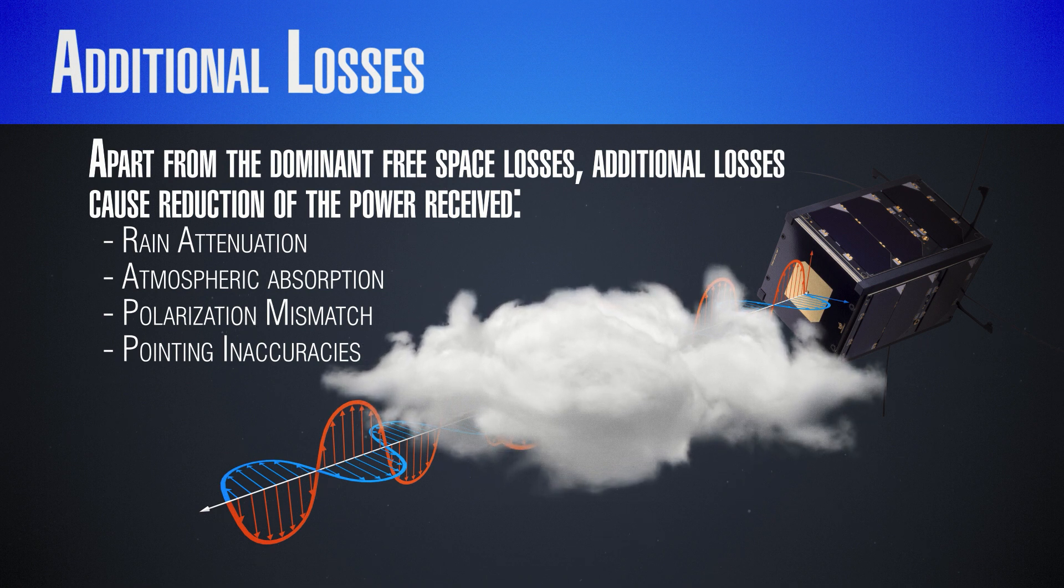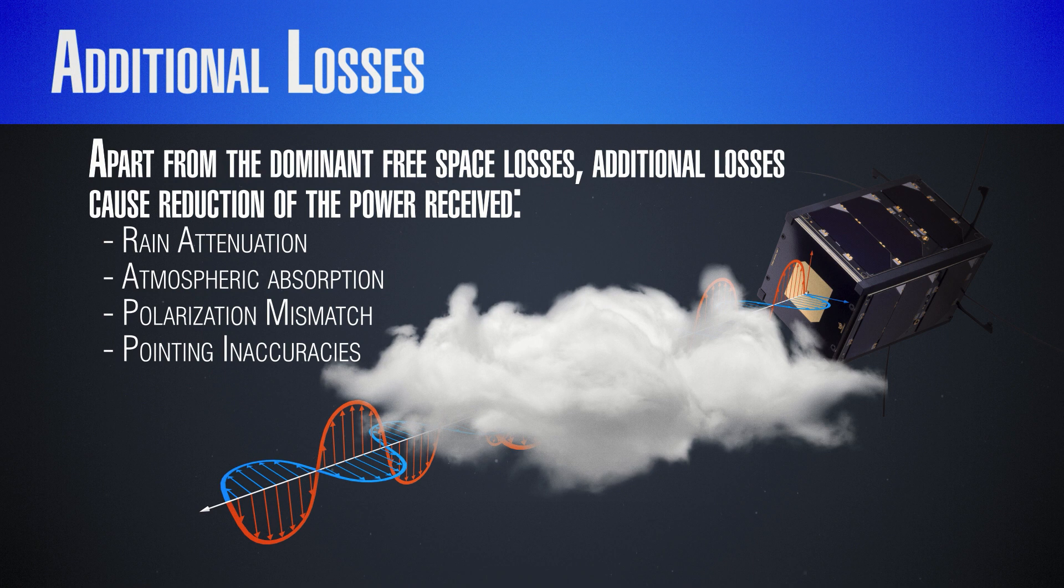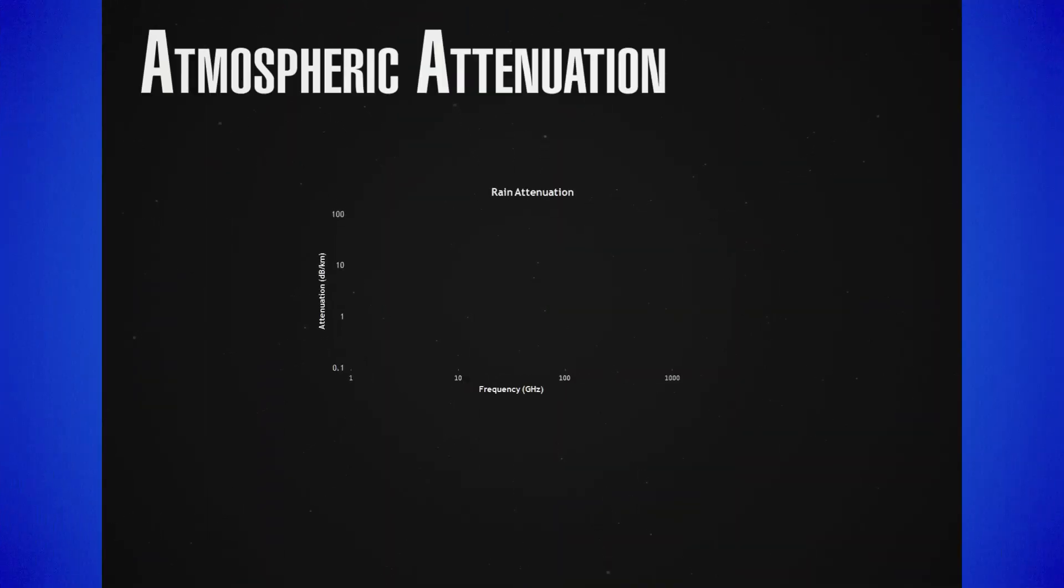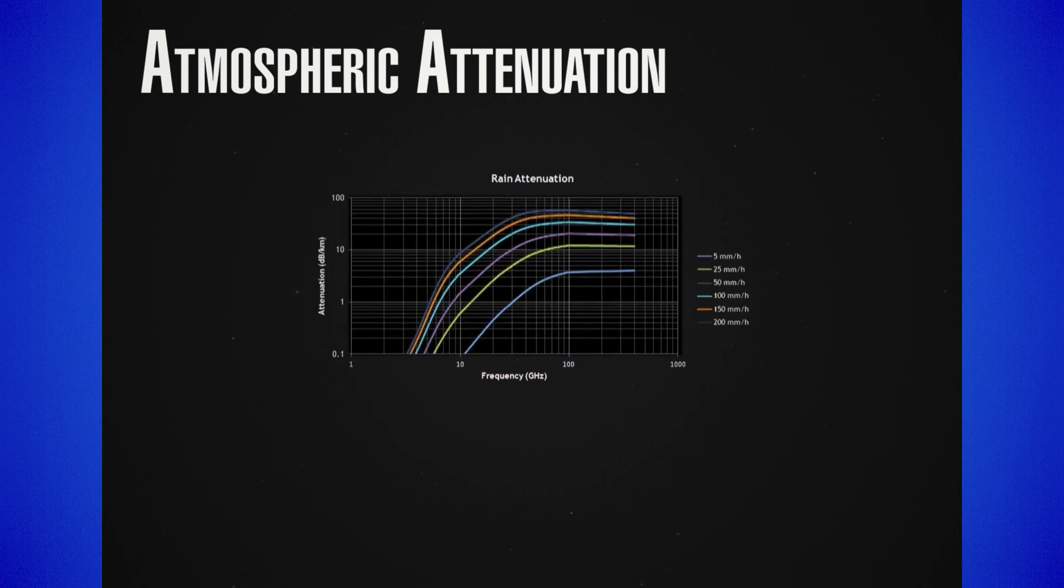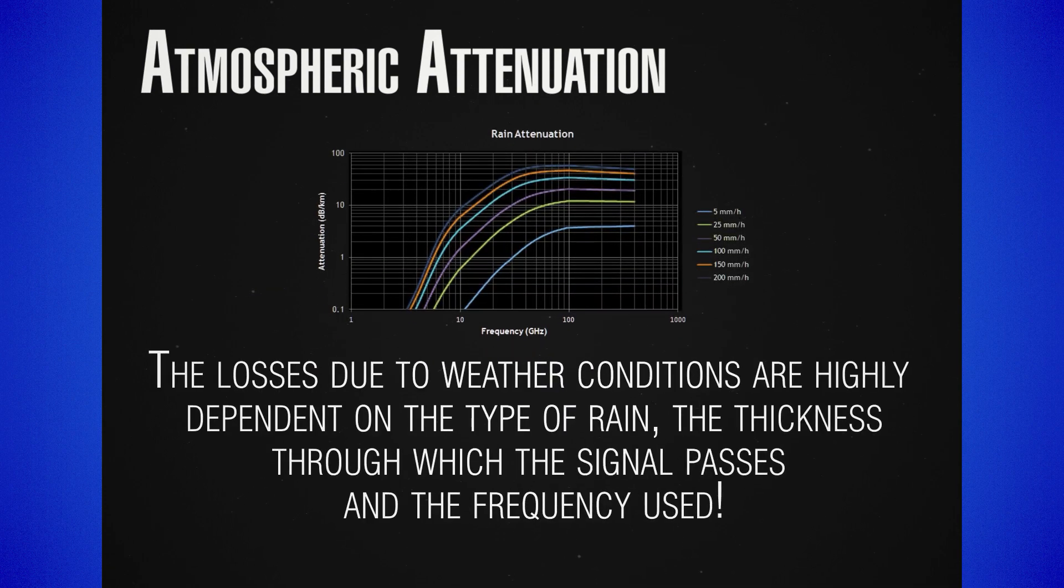The atmospheric attenuation is highly dependent on the satellite's altitude above the horizon and the weather conditions. Depending on the elevation, the atmosphere through which radio signals pass can vary from about 50 to about 200 kilometers. Since the attenuation is usually given as decibels per kilometer, this could be a huge difference.